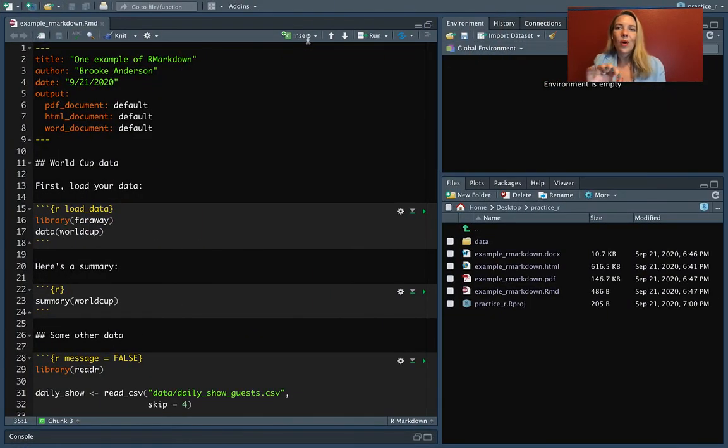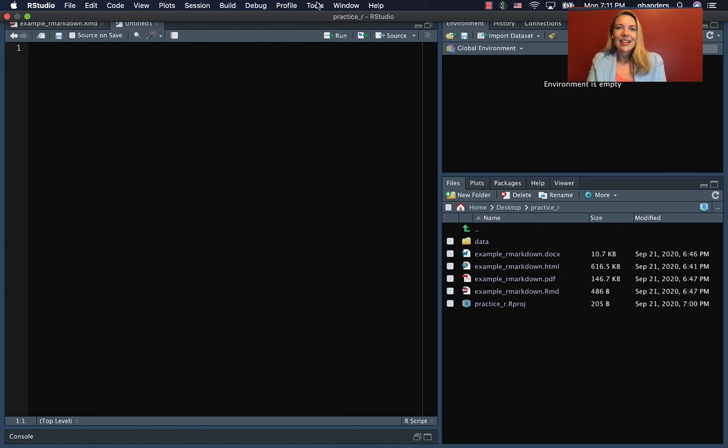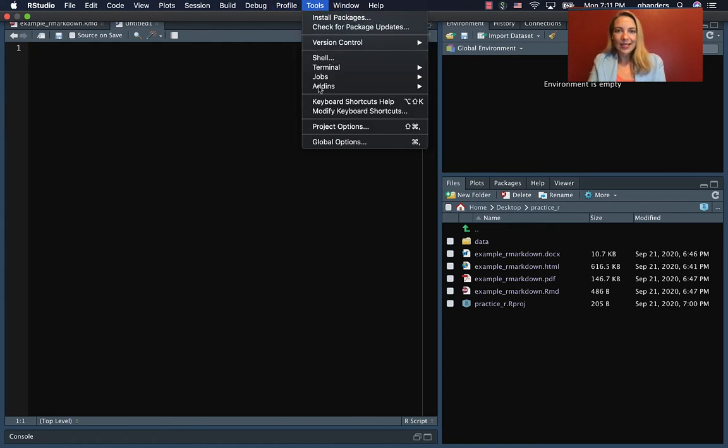In RStudio one way that you can check to make sure that you're doing that is you can actually set one of your global settings and I've got it set here but let me open a script so you can see it a little bit more clearly on a script. Right over here I have a line that shows me when I'm getting to 80 characters so I know if I'm going beyond that I need to do a carriage return or somehow reformat my code so I can fit it inside that range.